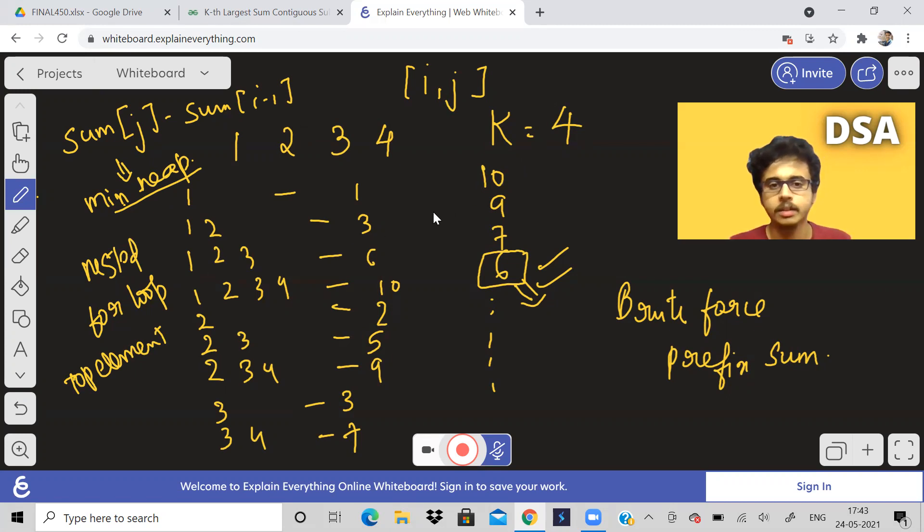Instead of doing all this, why can't you just sort it? If you are taking a min heap anyway, you are going to use extra space. Instead of making the time complexity n square log k, you can just make it n square. Sorting will take n log n. You need another array to store all the sum of subarrays. After that, just sort this array, it will take n log n. Sort it in reverse order and return the k minus 1th element, which will be the kth largest subarray.